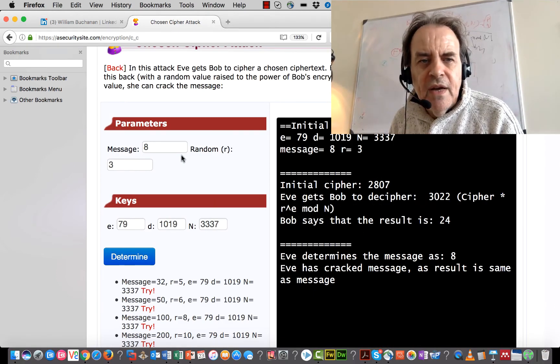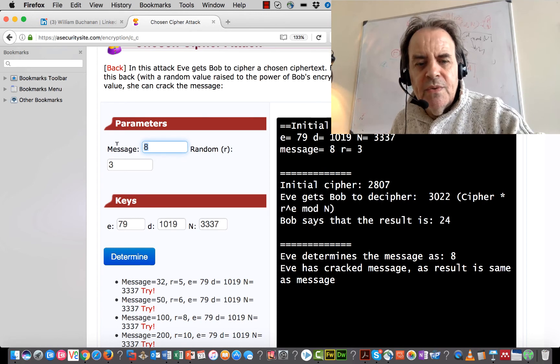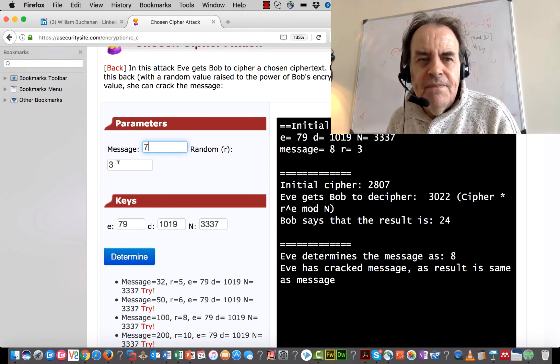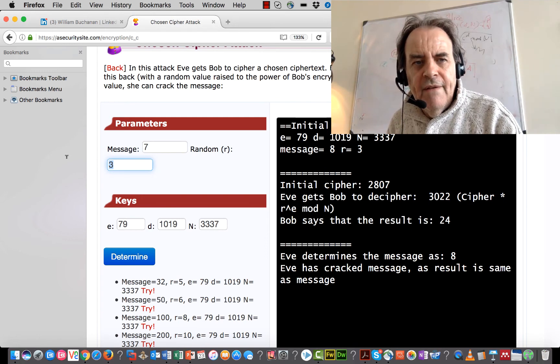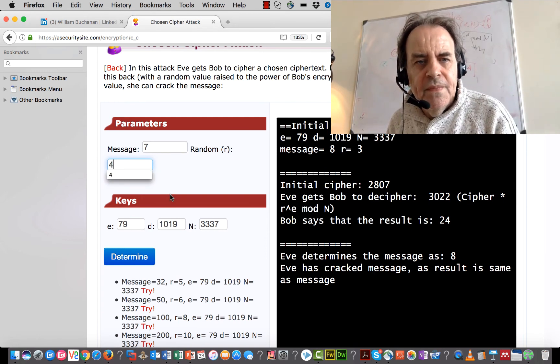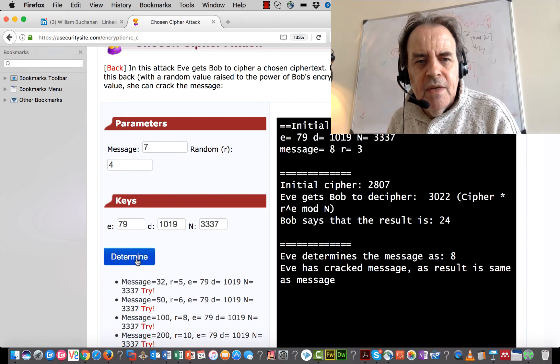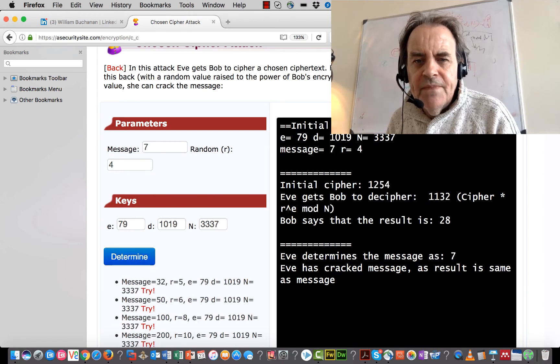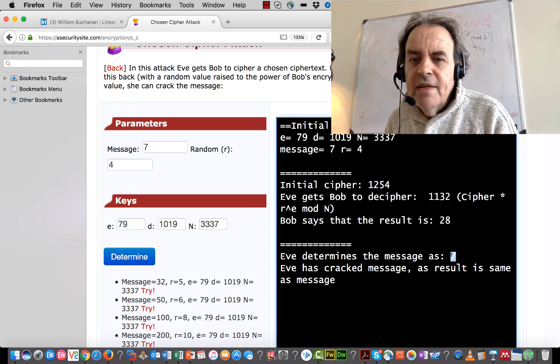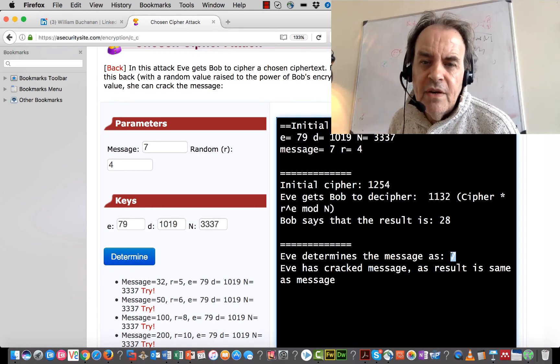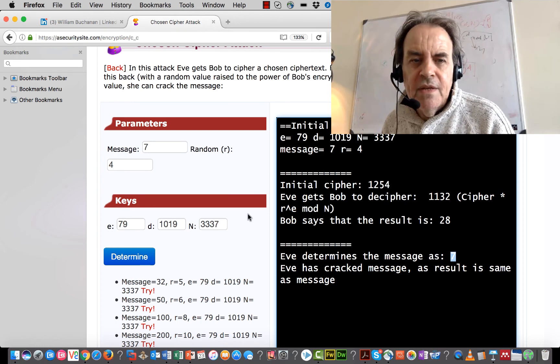So you can try this little calculator, but it should actually work. So we'll try value of 7 for the message and a random value of 4. I'll give that a try. We can see here that Eve has determined the value there of 7, which was the message.